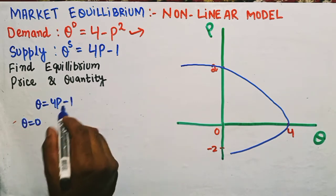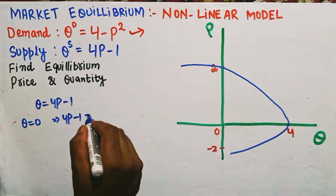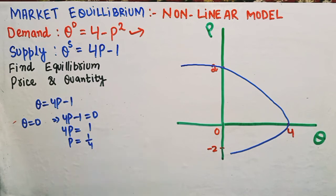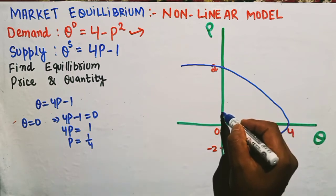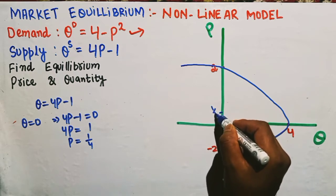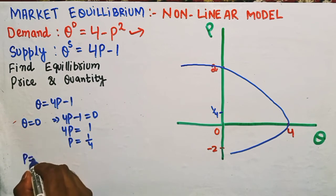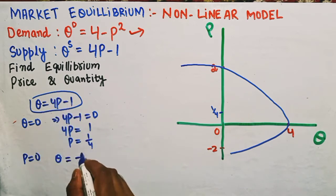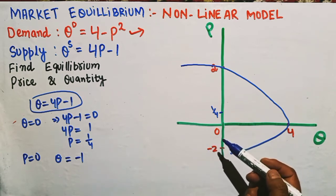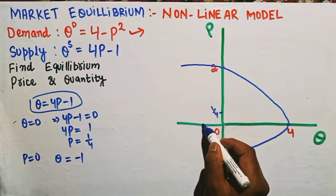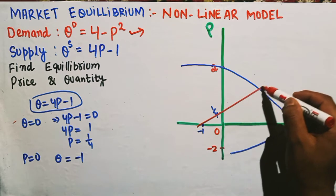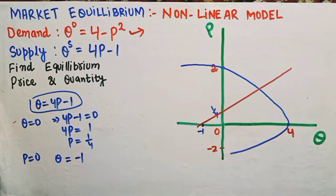For the supply function Q = 4P - 1, putting Q = 0 gives 4P = 1, so P = 1/4. When P = 0, Q = -1. So we mark P = 1/4 and Q = -1 as intercepts for the supply function.